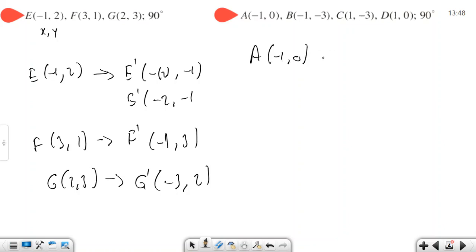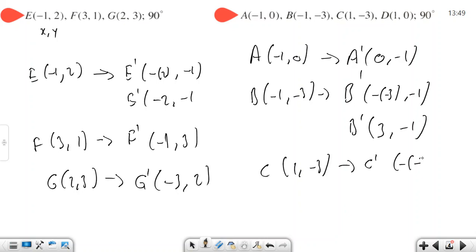A is (-1, 0). After the rotation, 0 times minus numbers, so negative minus becomes 0, so (0, -1). And for B, that's (-1, -3). So after rotation, B becomes minus negative 3, so (3, -1). And there's C: (1, -3). By the same idea, the new C will be equal to minus negative 3 and 1, so the new C equals (3, 1). D is (1, 0), so D equals (1, 0), and it's going to be the new D: (0, 1). These are 90 degrees rotation.